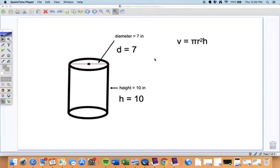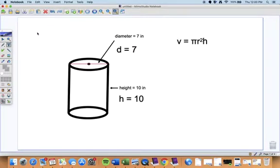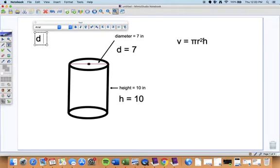So, the big thing to remember here is what we know about diameter and radius. We know that the diameter is equal to two times the radius.